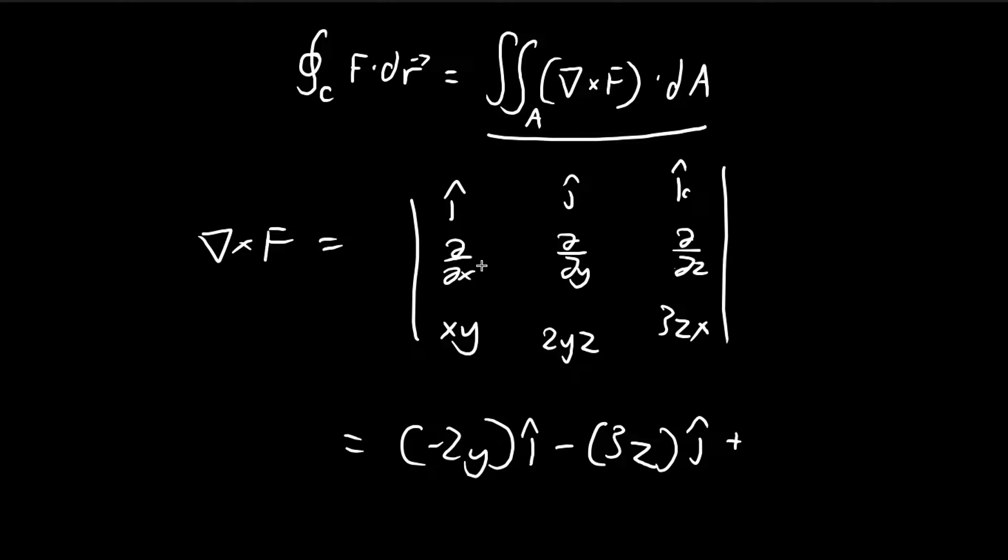And then for the k direction, once again, we take the derivative, that's 0. And then this derivative, that's equal to x. So minus x. So this is the curl.